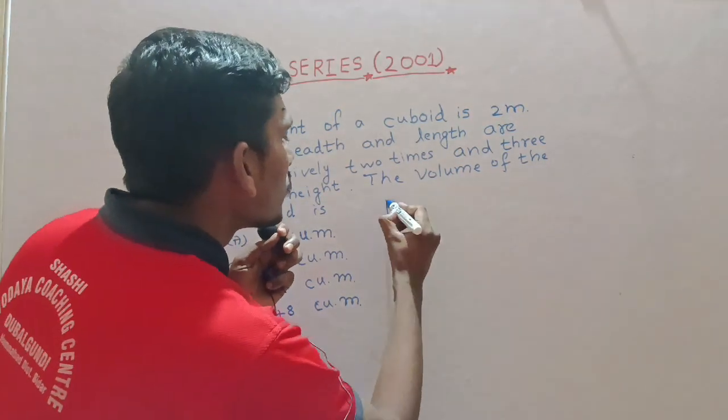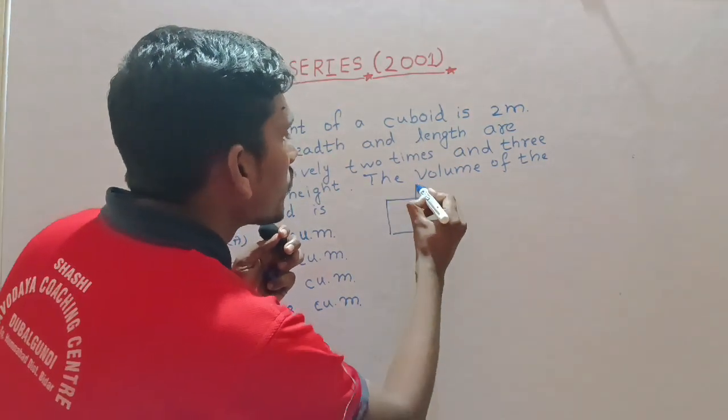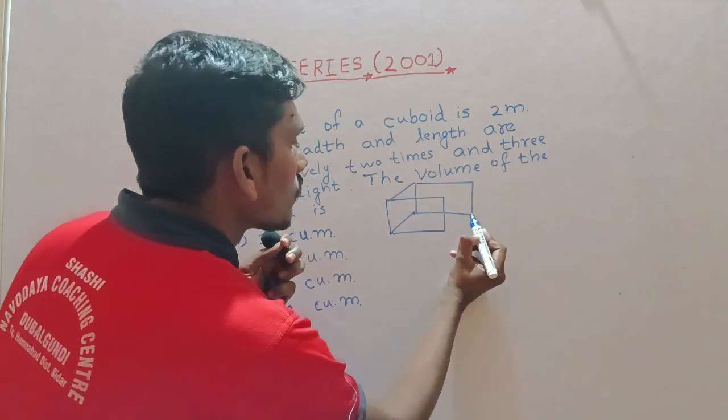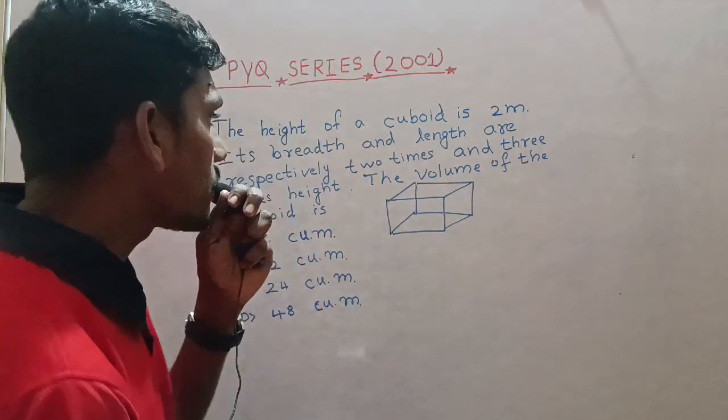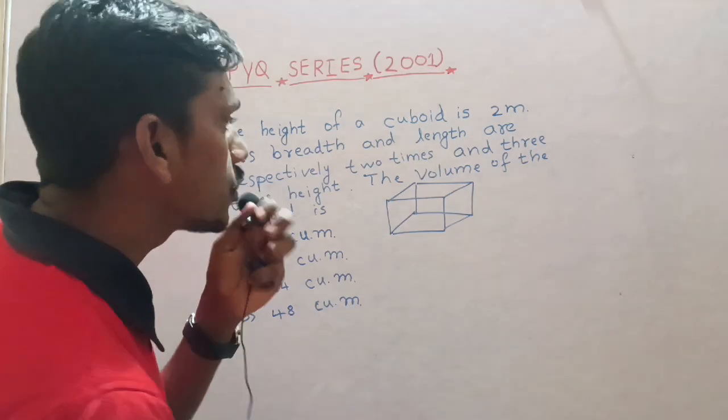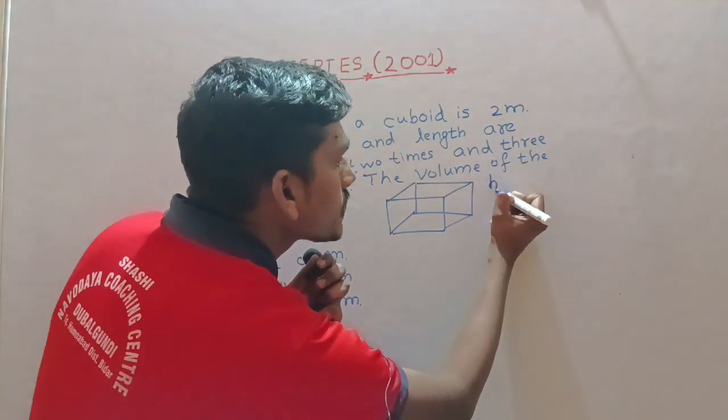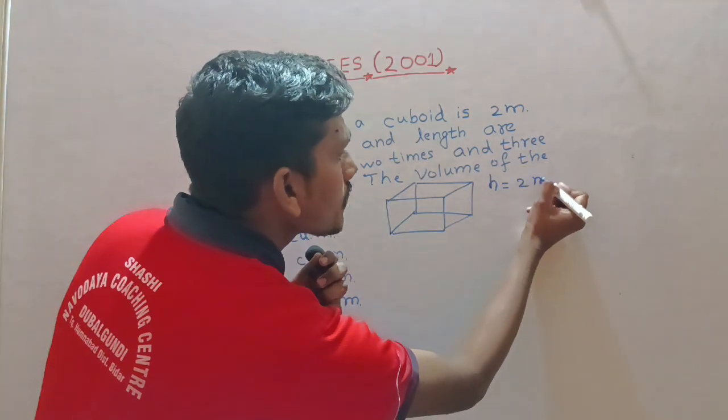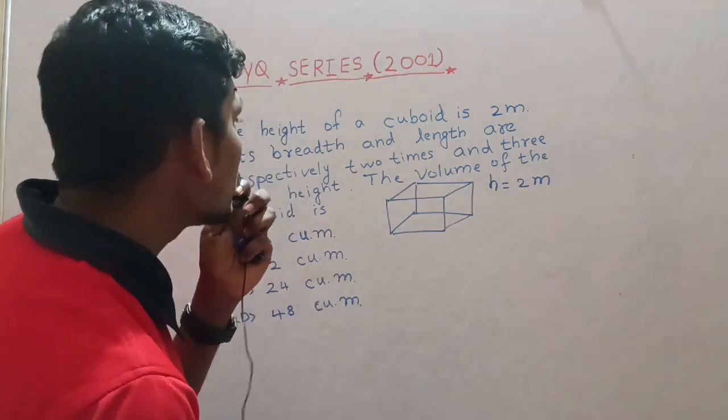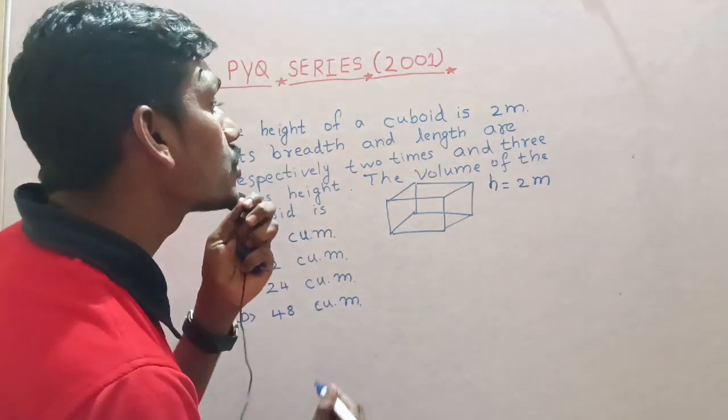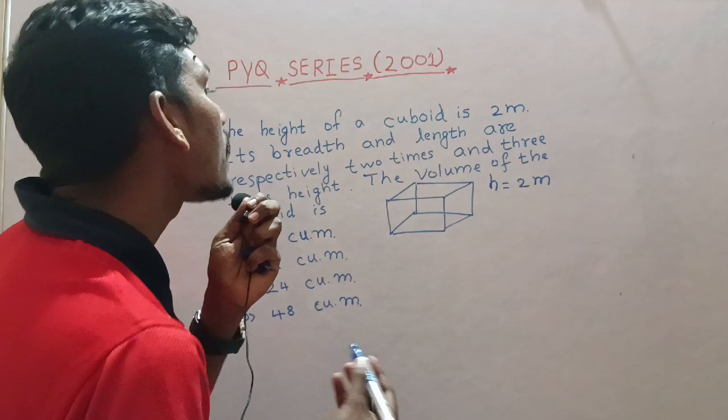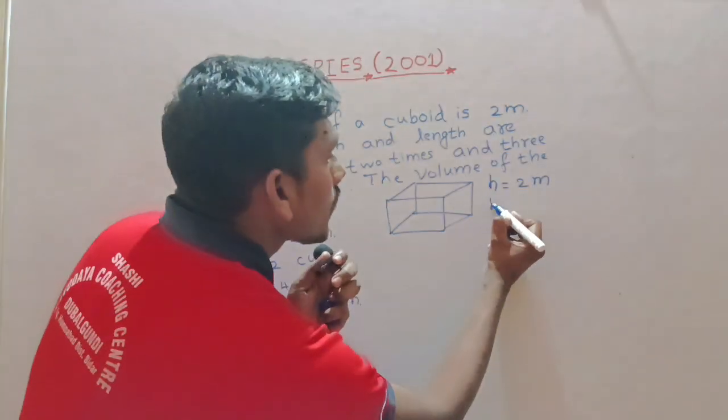Okay, cuboid. Here's the information for today: the height of a cuboid is 2 meters, and its breadth and length are respectively two times and three times height.